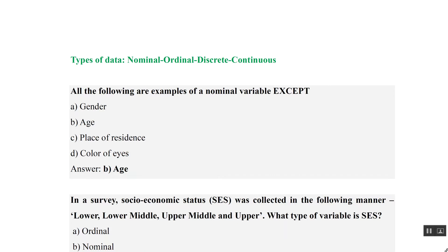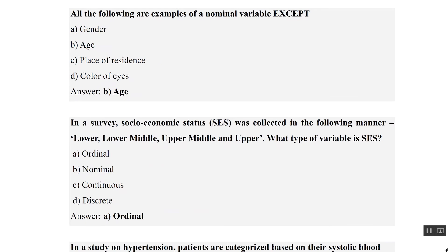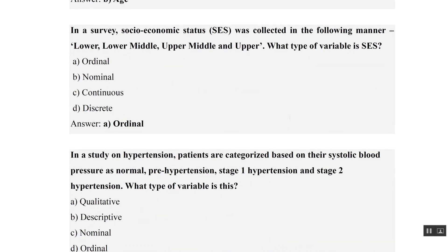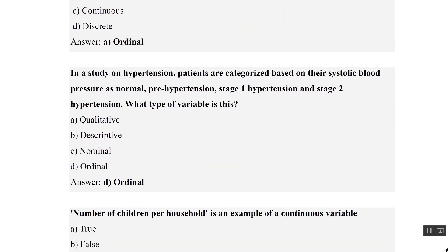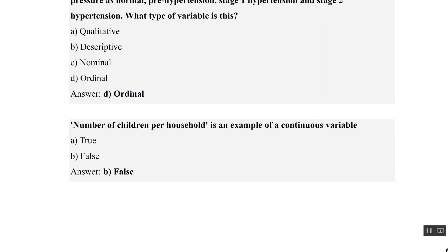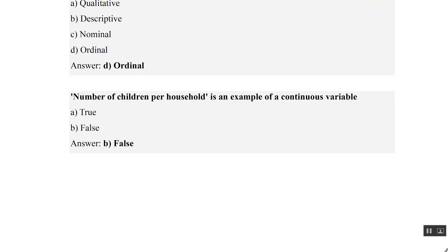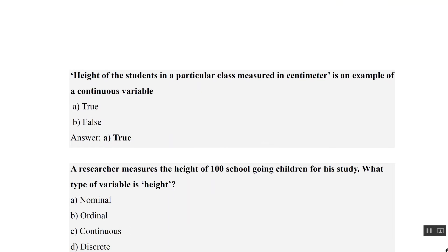Socioeconomic status — having a number — could be lower, lower middle, upper middle, upper, so there is order, making it ordinal data. Normal, pre-hypertension, stage one, stage two hypertension also has a certain order, so it is ordinal data. Number of children per household is an example of discrete variable, not continuous — children are counted as whole numbers: one, two, three, four. We cannot have 1.1 children.